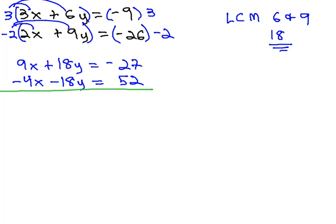We are now ready to combine these equations together, because we have opposites in front of the y's. 18y and negative 18y is 0, and we're left with 5x equals negative 27 plus 52 is 25.